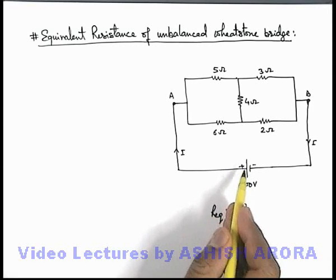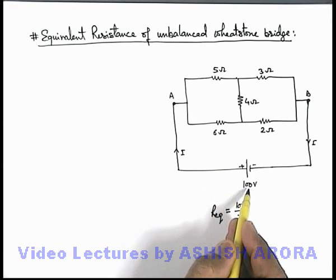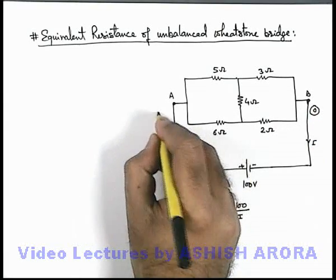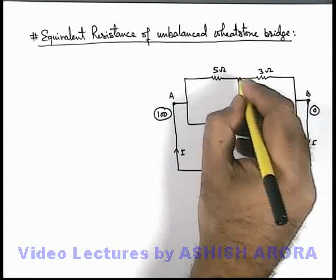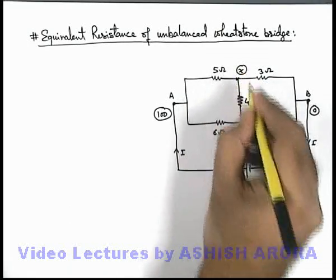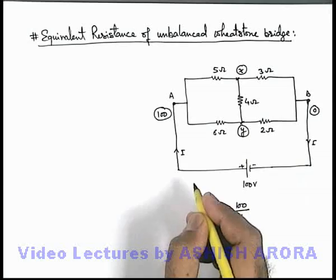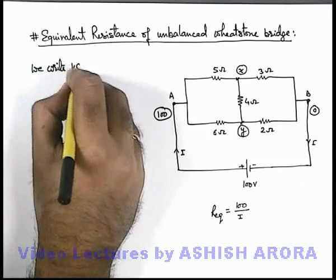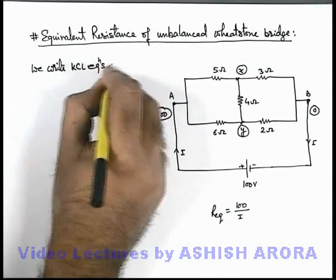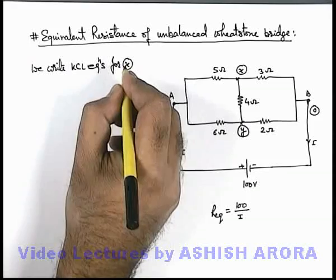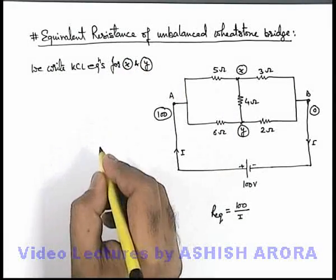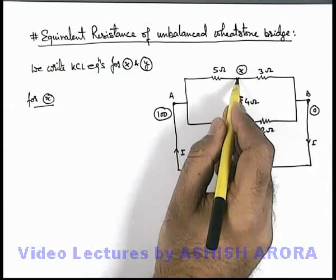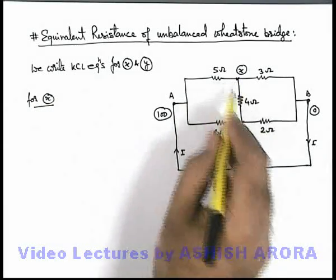Since we have taken a 100 volt battery for calculation, we consider on its negative side the potential is zero volts and on its positive side it is 100 volts. The intermediate junctions are taken at potentials X and Y. Now in this situation, we write KCL equations for X and Y potentials. For X, we write the sum of the outgoing currents from the junction where potential is X to be equal to zero.